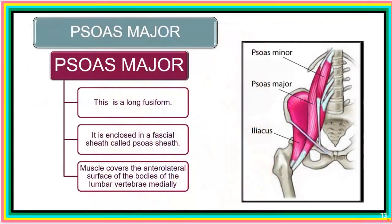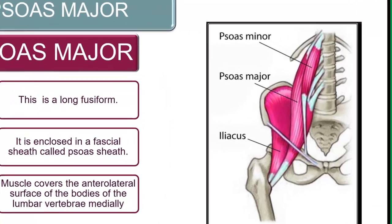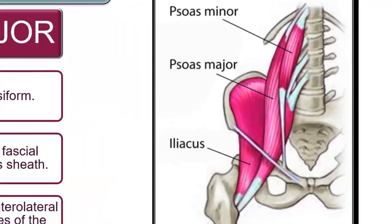Our next focus will be to look at the muscles forming these regions and understand their origin, insertion, action, and innervation. Topmost among these muscles is the psoas major. Here is the psoas major — the muscle is fusiform in shape.